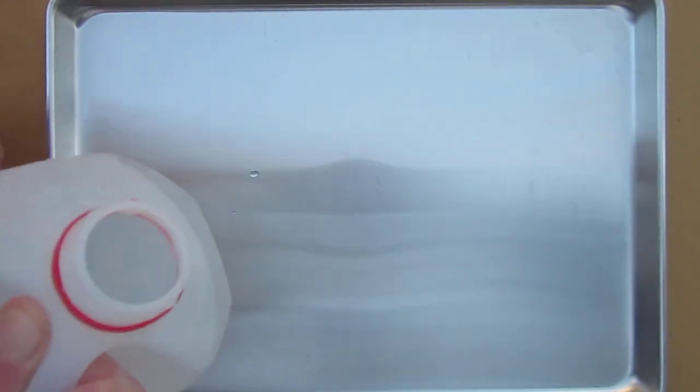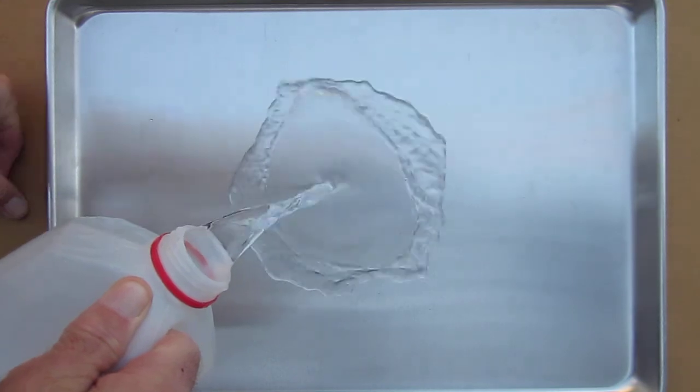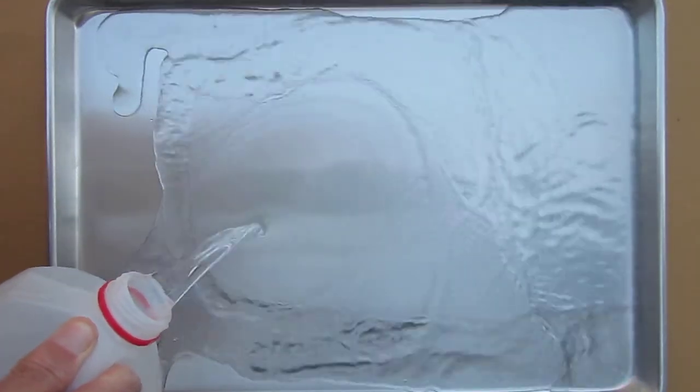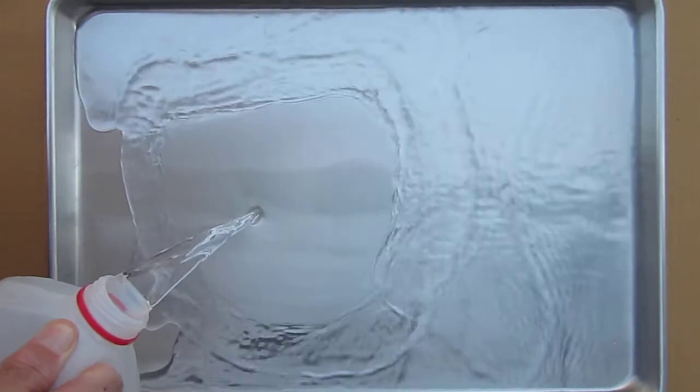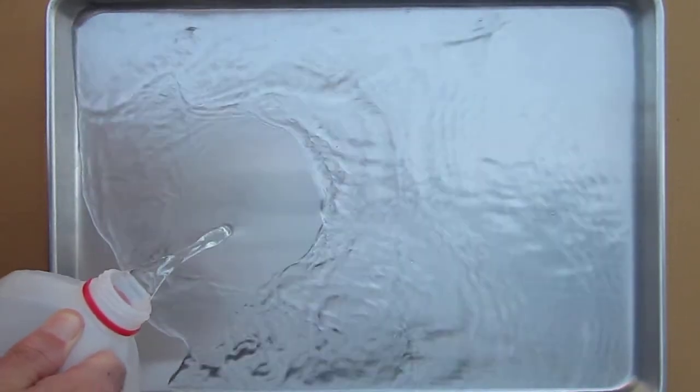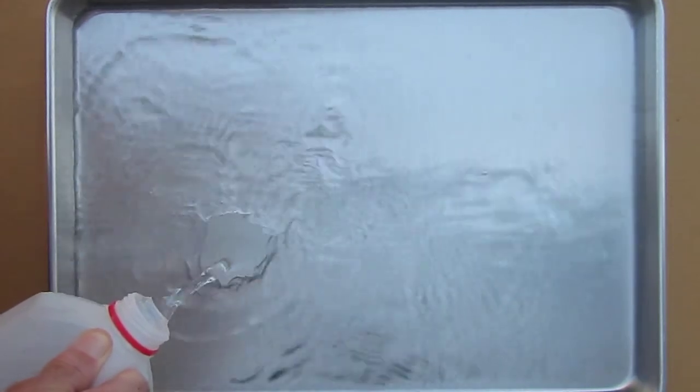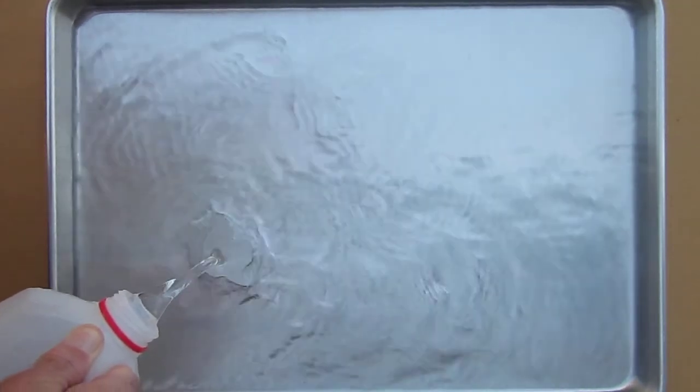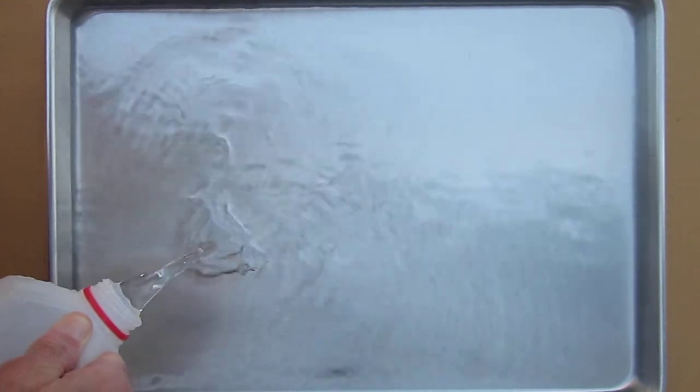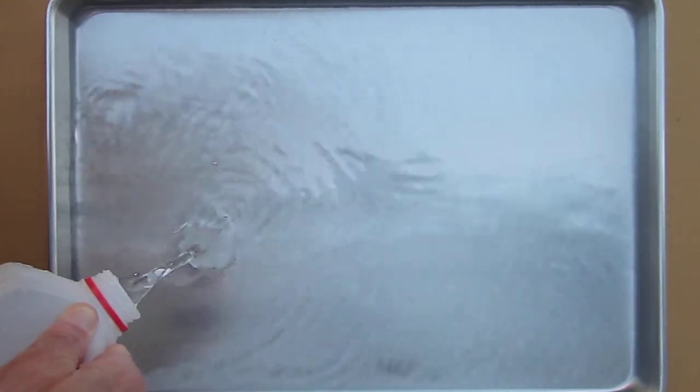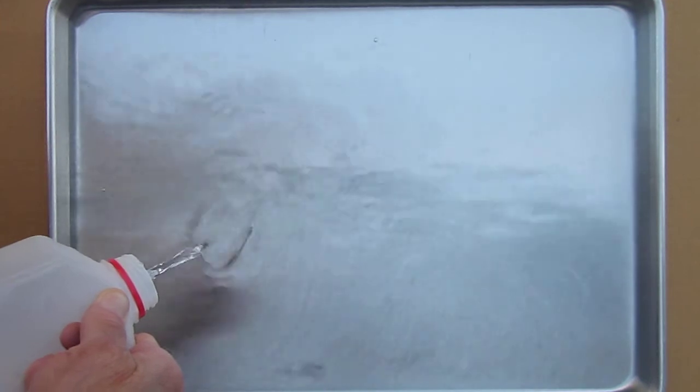We start with an aluminum cookie tin placed on a horizontal surface. We fill it with water. It's almost a half gallon of water.